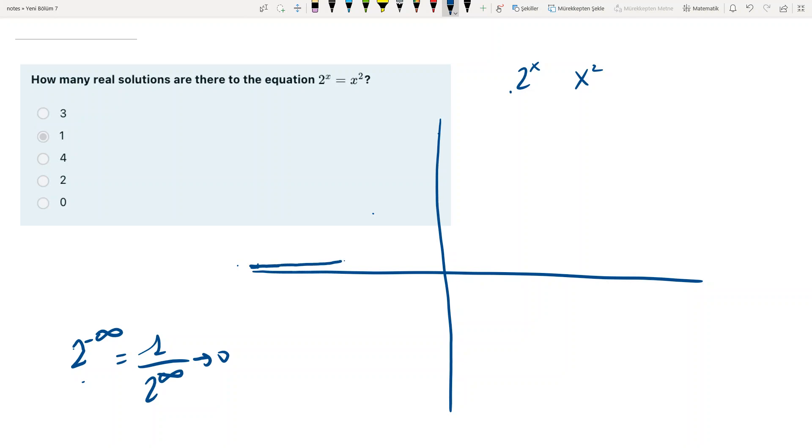It increases like this and when x is 0, as you all know, 2 to the x is 1 and it increases after that. What about x squared? As you know, x squared is a parabola. When x is 0, x squared is 0 as well.